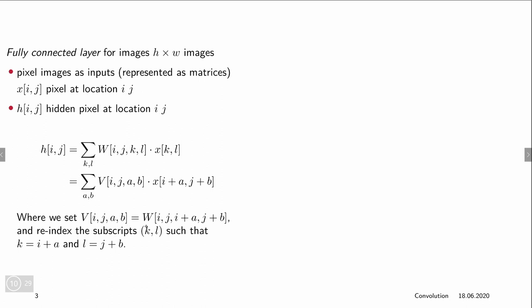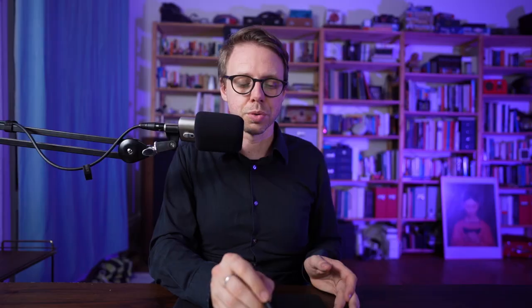So that means that the entry V_i,j,a,b equals W_i,j,i+a,j+b. We have done nothing but reorganized this array in order to work with these offsets a and b instead of k and l. And these are relative now to i and j. And the number of weights is still the same.